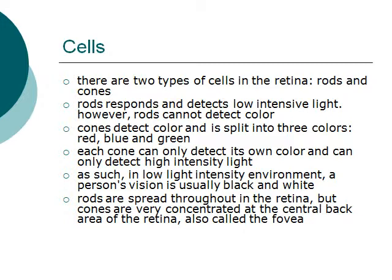The three cone types represent red, blue, and green. Each cone can only detect its own color and can only detect high-intensity light. As such, in low-light intensity environments, a person's vision is usually black and white.